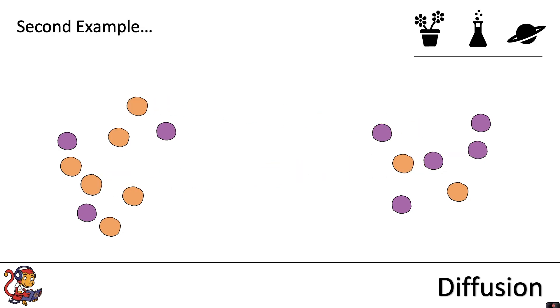In a second example, this time there are differences in concentration for both the orange and the purple particles. So you'll see some orange particles move by diffusion from high to low concentration, and also some purple particles move from a high to low concentration to balance everything out.